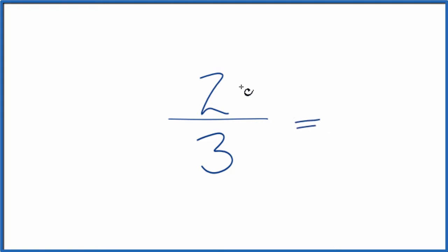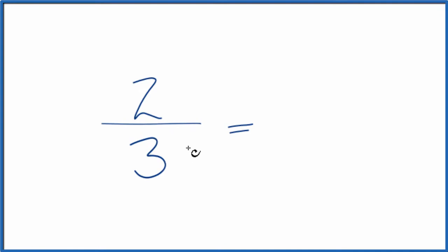So we could just multiply the numerator and denominator by 2. 2 times 2 is 4. 3 times 2 is 6. And 4/6, that's an equivalent fraction to two-thirds.